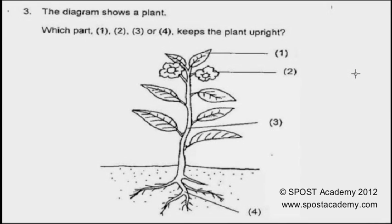The diagram below shows the plant. Which part — 1, 2, 3, or 4 — keeps the plant upright?